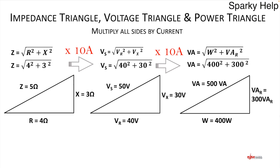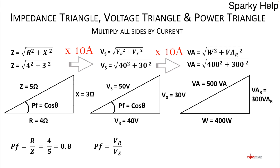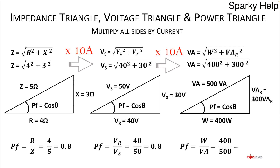One thing left: power factor. Going back to the impedance triangle: power factor equals the cosine of the angle, which is R over Z — 4 divided by 5 gives a power factor of 0.8. On the voltage triangle it's VR over VS, which is also 0.8. And on the power triangle it's watts over VA — 400 over 500 — still 0.8. So we've got the power factor from each of the three triangles.